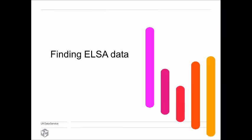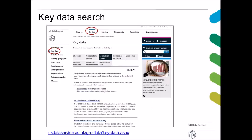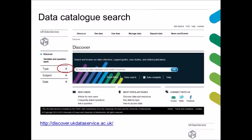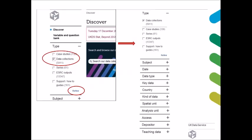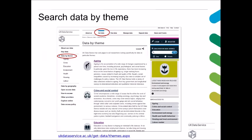How would you go about finding ELSA data in our catalog? You have three options. One is to use a key data search — click on 'Get Data', then on the left-hand side select 'Key Data', click on 'Longitudinal Studies', and scroll down to find ELSA. Another option is to use a data catalog search where you specify data collections and type the title. The third option is to search by theme — select 'Get Data', then 'Data by Theme', and click on the 'Aging' theme, which will show a table of relevant data sources including ELSA.